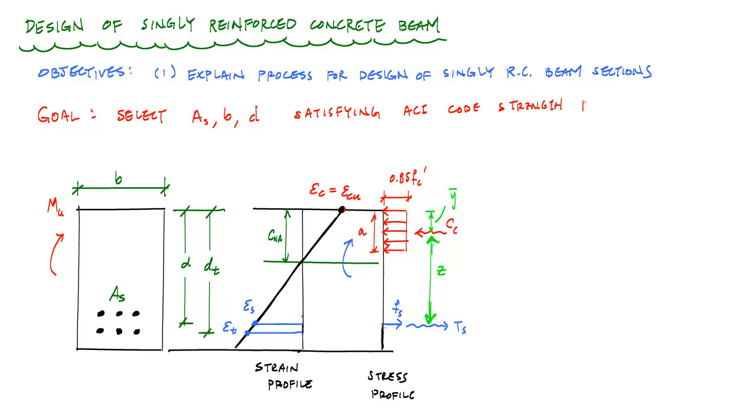Those are things like phi MN greater than or equal to MU, or the design moment strength greater than the ultimate moment that could be applied here, the design shear strength greater than or equal to VU, and even the design axial strength greater than or equal to the internal axial loading. But in this case, because we're focusing on beams here, we're not going to worry about this right here. We're going to assume that our structural systems have only internal moments and shears.